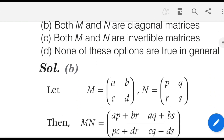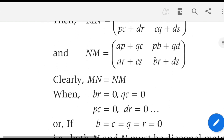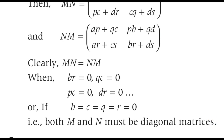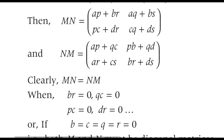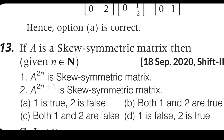For this sum, look at the M and N values. Both M and N must be diagonal matrices. So the answer is confirmed. Next question: if A is a skew matrix, what is the condition?